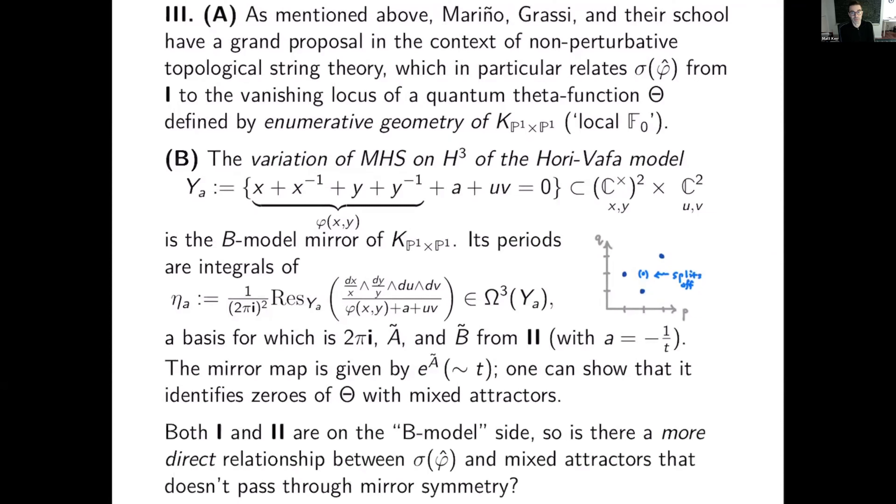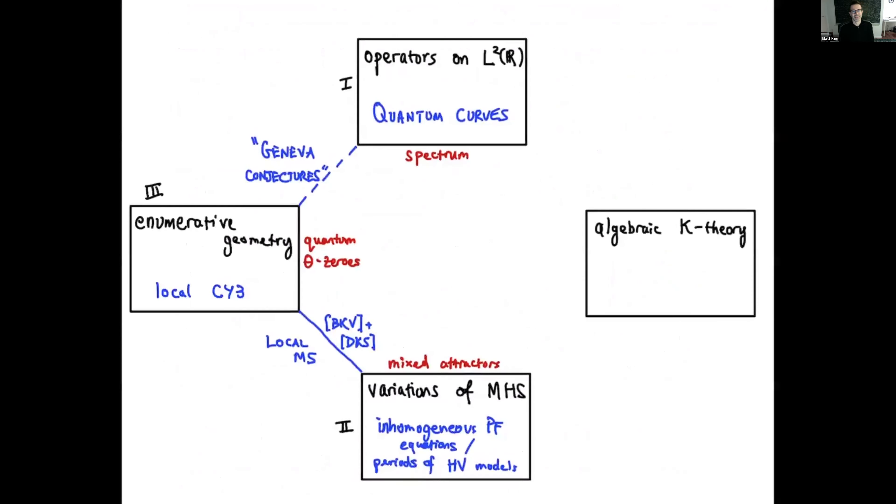So that's a form of local mirror symmetry. So both 1 and 2 are on the B model side before we got to this slide. So perhaps there is a more direct relationship between the spectrum and mixed attractors, which we numerically saw the coincidence of, that doesn't pass through mirror symmetry. If we could find that, then we could actually confirm this conjecture of Mourinho and Grassi. So the picture up to this point is this. We have operators on L2 of R, specifically quantum curves and their spectra, linked by these Geneva conjectures to the enumerative geometry of the local Calabi-Yau threefolds and the quantum theta function you build from.